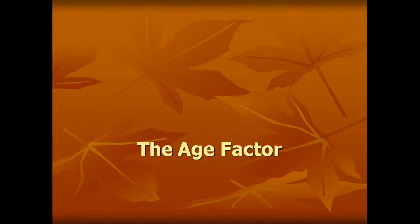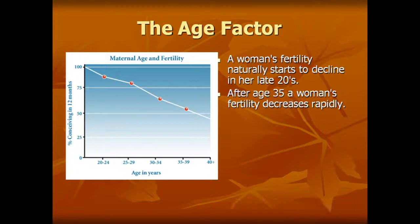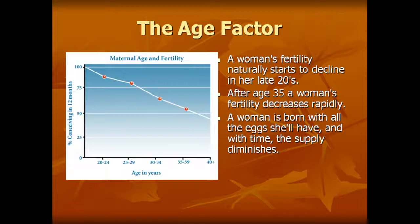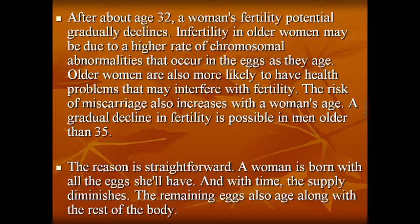The age factor: as age increases, a woman's fertility naturally starts to decline in her late 20s. After the age of 35, a woman's fertility decreases rapidly. A woman is born with all the eggs she will ever have; with time the supply diminishes and the remaining eggs also age. After the age of 32, a woman's fertility potentially gradually declines. Infertility in older women may be due to higher rates of chromosomal abnormalities that occur in the eggs as she ages.